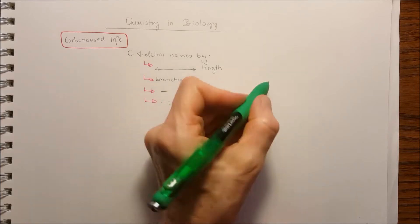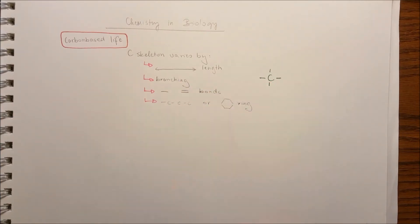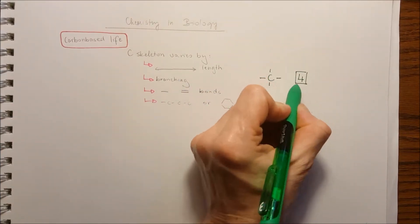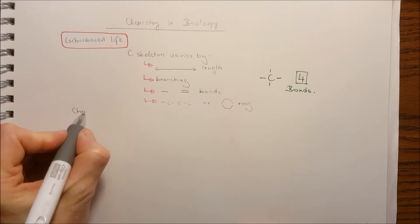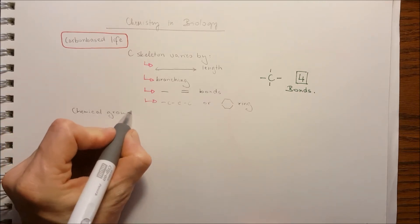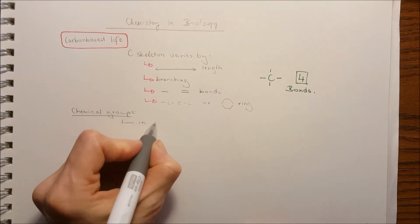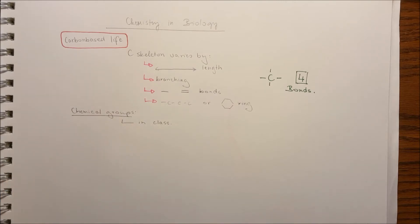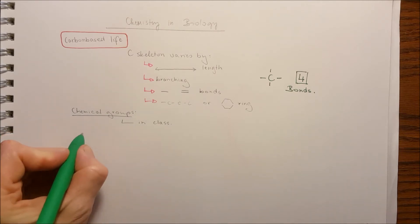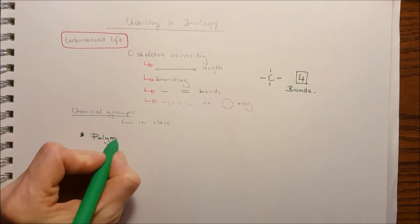The carbon forms four covalent bonds with other atoms. The chemical groups, the different chemical groups, we will cover that in class, but you have to know whether they are polar or non-polar and whether they are acidic or base.